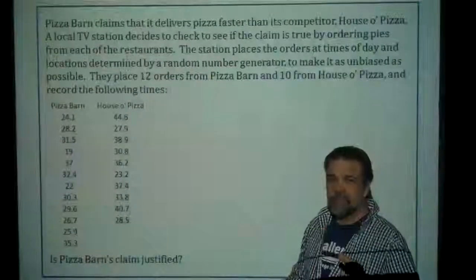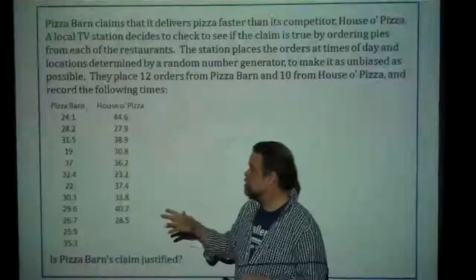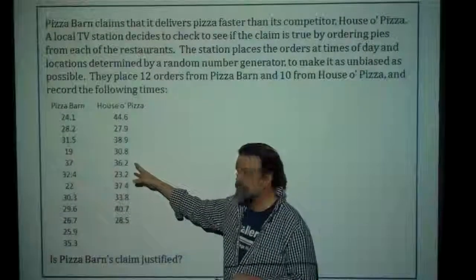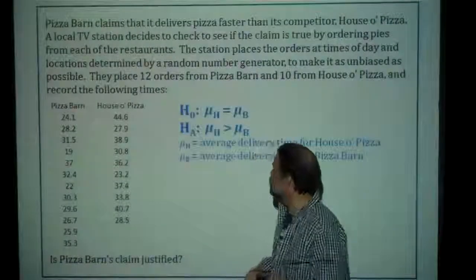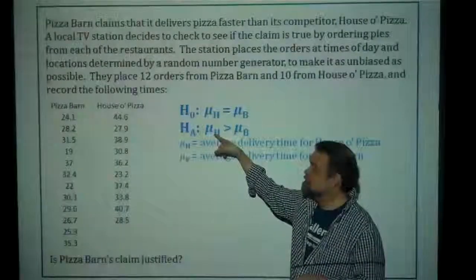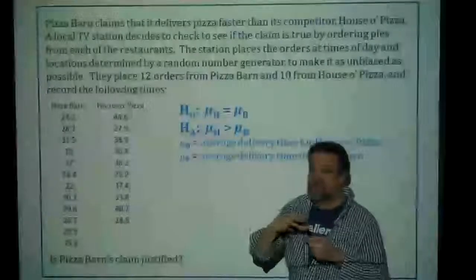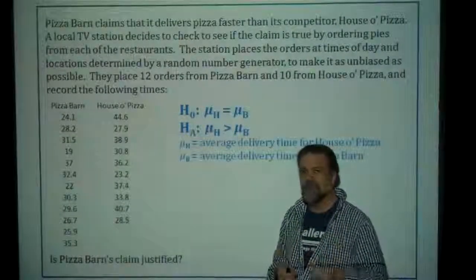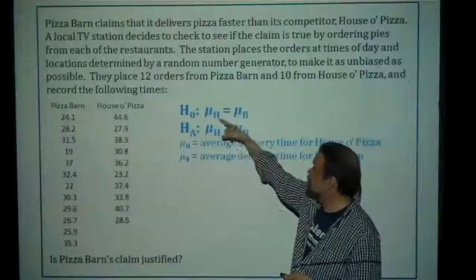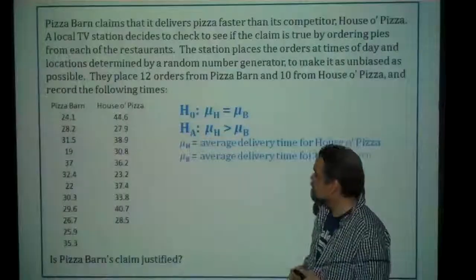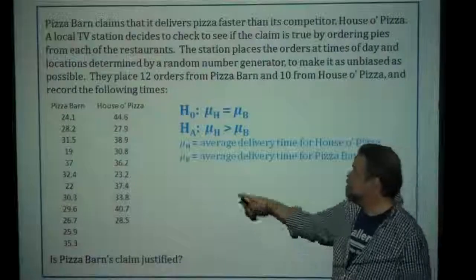Their claim is that their delivery time is faster than House of Pizza's — in other words, that the average time for House of Pizza is greater than the average time for Pizza Barn. That's the alternative hypothesis, the thing you're trying to show evidence of. The null hypothesis must then be that the two means are the same. We define mu_H as the average delivery time for House of Pizza and mu_B as the average delivery time for Pizza Barn.